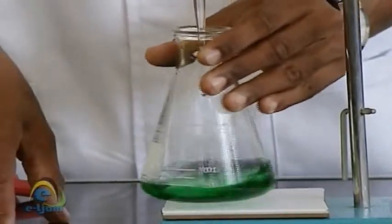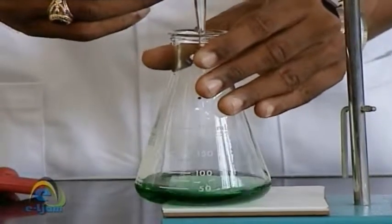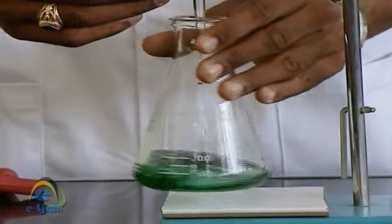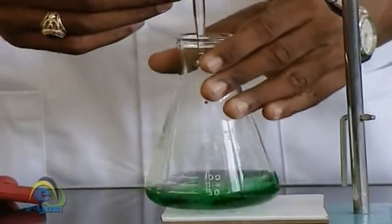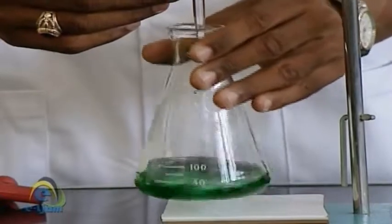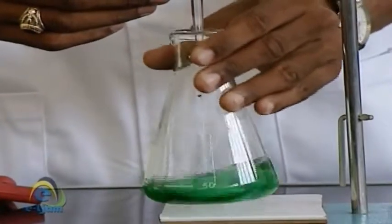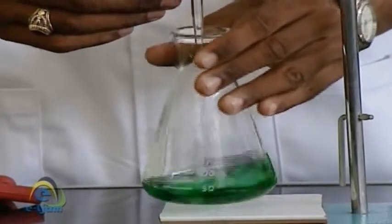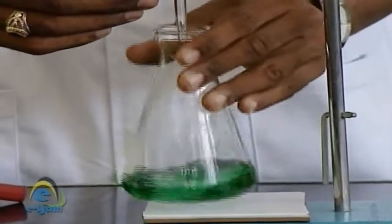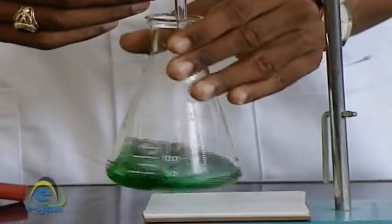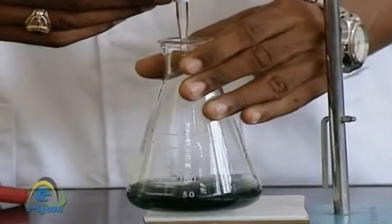Repeat the titration with further 25 cubic centimeter aliquots of the carbonate solution until two concordant readings are obtained. If concordant readings are not obtained, readings which agree to within plus or minus 0.1 cubic centimeters, or three readings which do not show any trending values up or down, will be accepted.